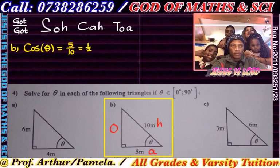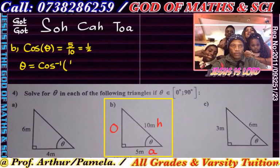Now if you're looking for theta, you're gonna press arc cos — in your calculator you press second function, or inverse cos. So we're gonna put in 1 over 2 to get the answer, and the calculator will give you a whopping 60 degrees. And that is your answer.